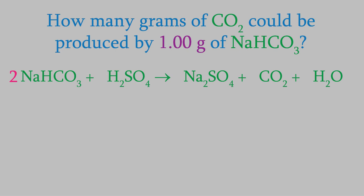Now our sodium and sulfur are balanced, but not the carbon, hydrogen, and oxygen. But the advice I gave you before is still true: start by balancing things that only appear in one place on each side of the reaction. In this case, carbon is only in one molecule on each side, so let's balance that one. There are two carbons on the left, one for each sodium bicarbonate molecule, and one on the right, so we'll put a two in front of the carbon dioxide.